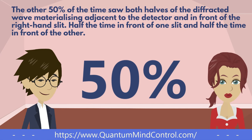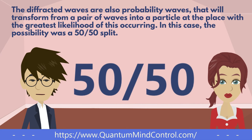The other 50% of the time saw both halves of the diffracted wave materializing adjacent to the detector and in front of the right-hand slit — half the time in front of one slit and half the time in front of the other. The diffracted waves are also probability waves that will transform from a pair of waves into a particle at the place with the greatest likelihood of this occurring. In this case, the possibility was a 50-50 split.